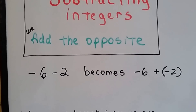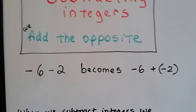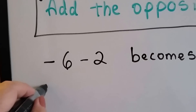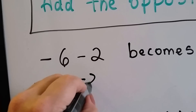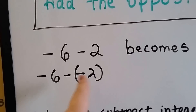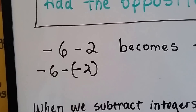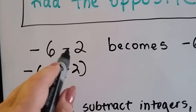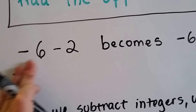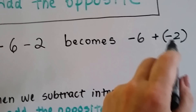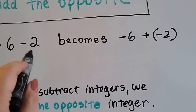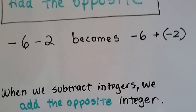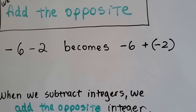A negative 6 minus 2 — we know this is a positive 2. If it was a negative 2, it would be written in parentheses to separate it from the subtraction sign. But it's not, so this is a negative 6 minus a positive 2. So what's the opposite of positive 2? It's negative 2, and since we're adding the opposite, that minus sign needs to become a plus sign. So our equation becomes negative 6 plus negative 2.